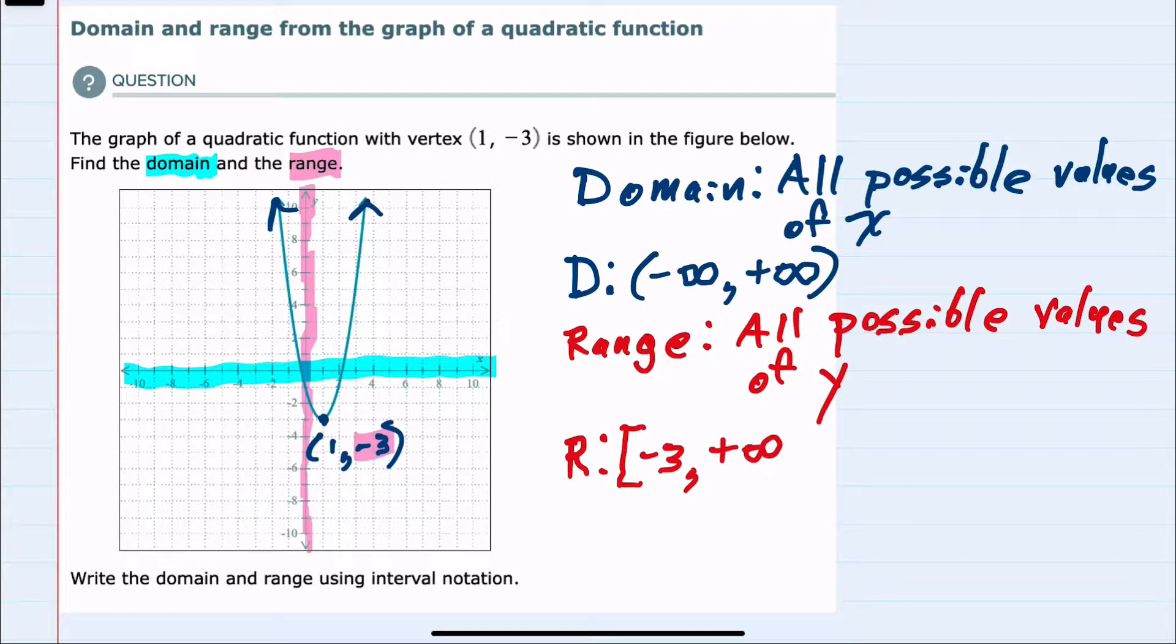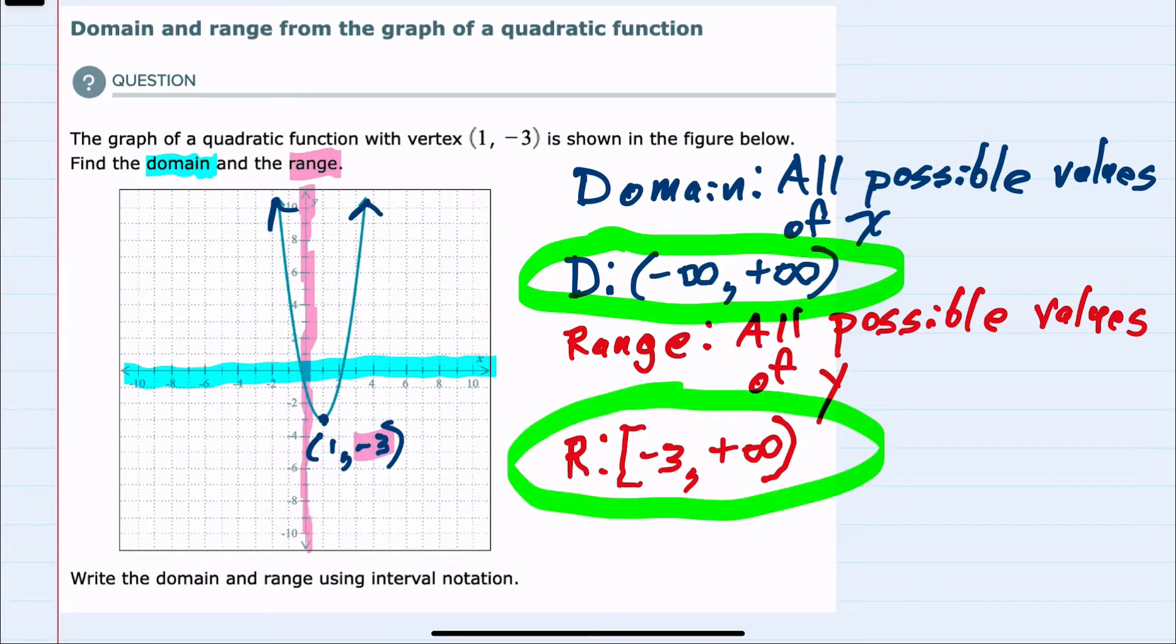And for infinity we always use the rounded bracket to show that it is not inclusive. So we have shown all possible values for x (the domain) and all possible values for y (the range) for this quadratic function.